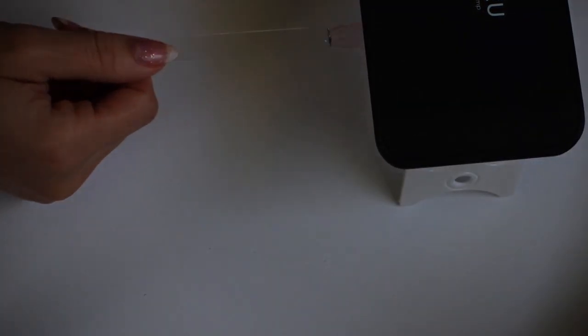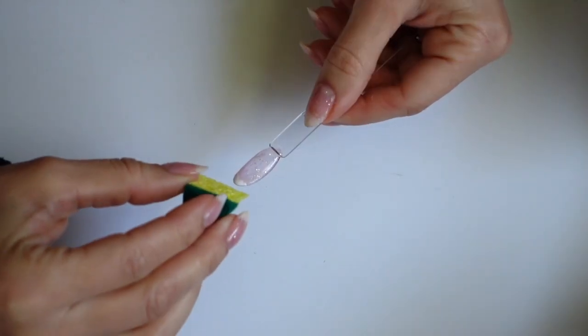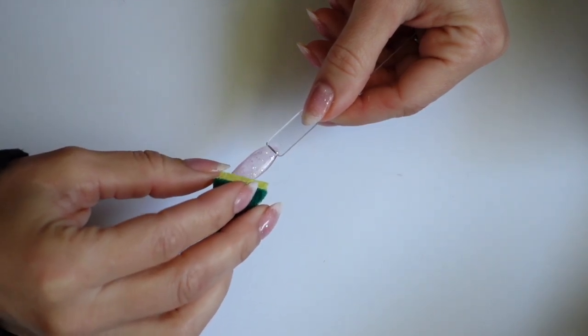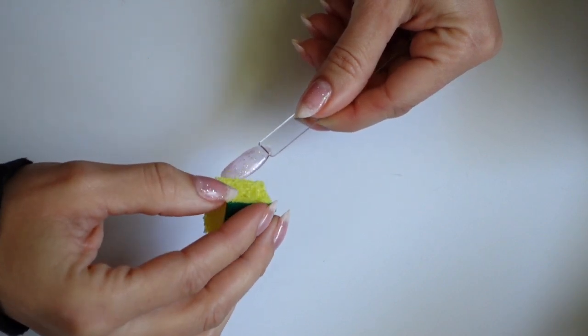Now, this is optional depending on how deep and opaque you want that white, but the best part about this is you really can't mess it up. It can be a little sloppy. The white can trail down the sides of the nail a little bit. It could be as thin or as thick as you want, but it's really fun and really easy to create.